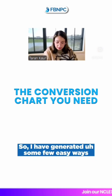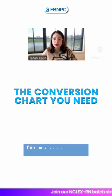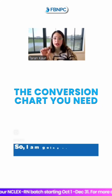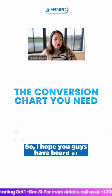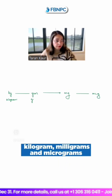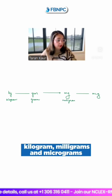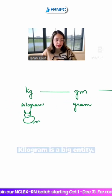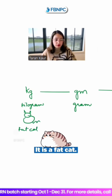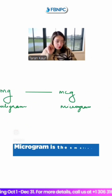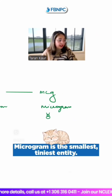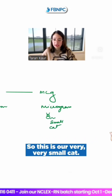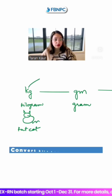I have generated some easy ways for my students to do the calculations, but we'll start from the basics first. I am going to give you guys a conversion chart. I hope you guys have heard of kilogram, gram, milligram, and microgram. Kilogram is a big entity — it is a fat cat. Microgram is the smallest, tiniest entity — it is our very, very small cat.